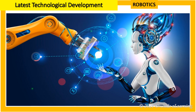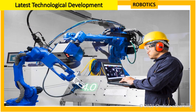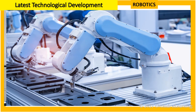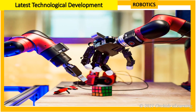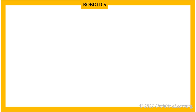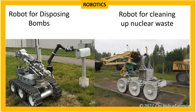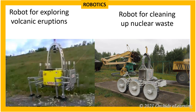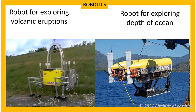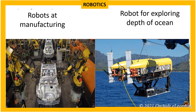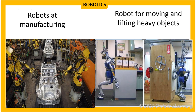Robotics: Robots are used to perform various physical and dangerous tasks mechanically. They are either controlled by a computer chip (automated) or by a human manually. Areas where robots are being used include: disposing of bombs, cleaning up nuclear waste, exploring areas with extreme conditions such as volcanic eruptions or the depths of the ocean, manufacturing jobs such as production lines, packing, and welding, and moving and lifting heavy objects or installing large engines.